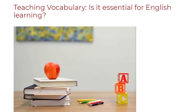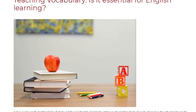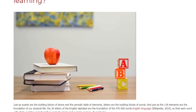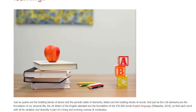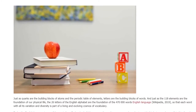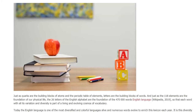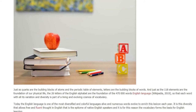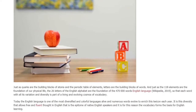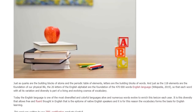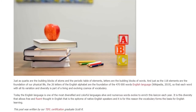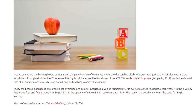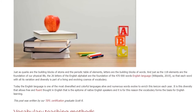Teaching vocabulary — is it essential for English learning? Just as quarks are the building blocks of atoms and the periodic table of elements, letters are the building blocks of words. Just as the 118 elements are the foundation of our physical life, the 26 letters of the English alphabet are the foundation of the 47,000-word English language, so that each word with all its variation and diversity is part of a living and evolving cosmos of vocabulary.